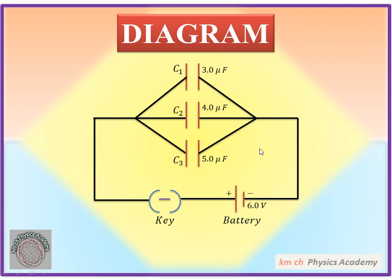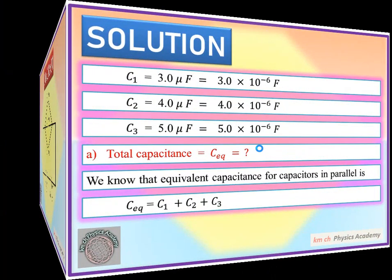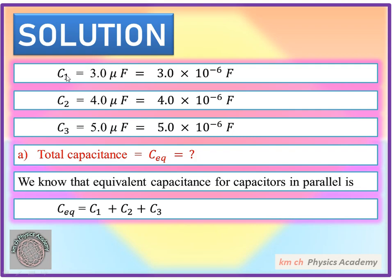So now we have to find the equivalent capacitance or total capacitance. We also need to find the charge stored on each capacitor, which depends on the capacitance and the potential difference across each capacitor. For capacitor C1, the capacitance is 3.0 microfarad.